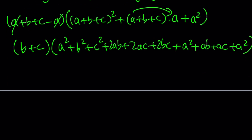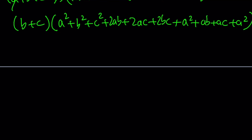We still have to include minus b cubed minus c cubed — don't forget that. This gives us b plus c multiplied by: now we have a squared plus a squared plus a squared, so that is 3a squared.